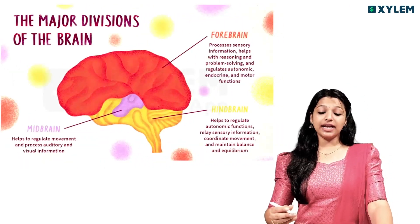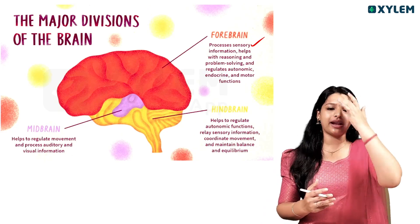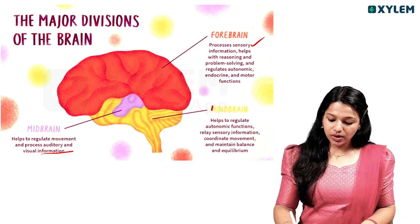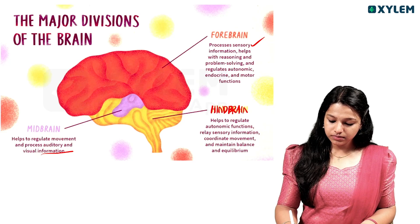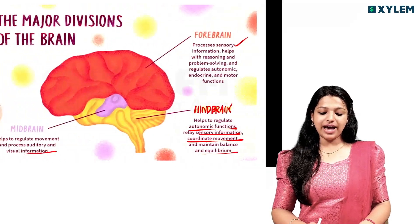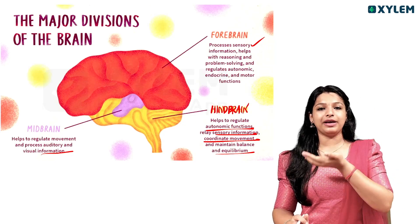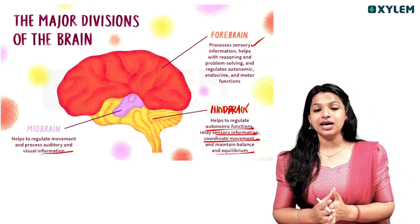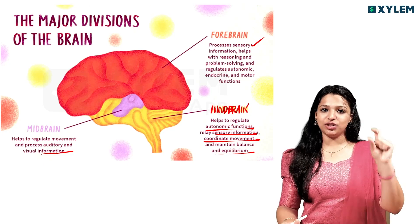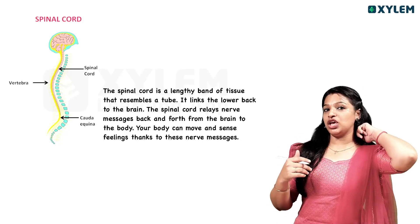The forebrain handles sensory information, thinking, reasoning, logical and problem-solving skills. The cerebellum handles body balance. The medulla oblongata controls heart beat. The spinal cord passes through the vertebral column and is also important for body functions.